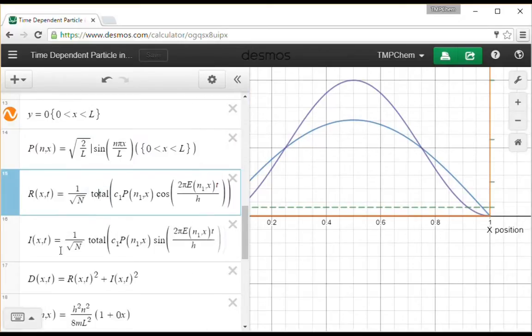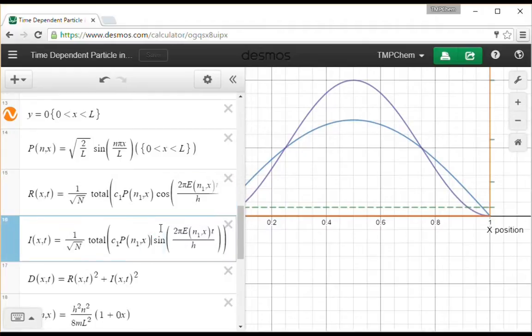So the real part is dependent on a cosine in time. I've got a normalization constant here times coefficient times our particle-in-a-box wave function times cosine 2 pi e of that function t over h or h bar. My imaginary part is the same thing except instead of a cosine function, it is a sine function.